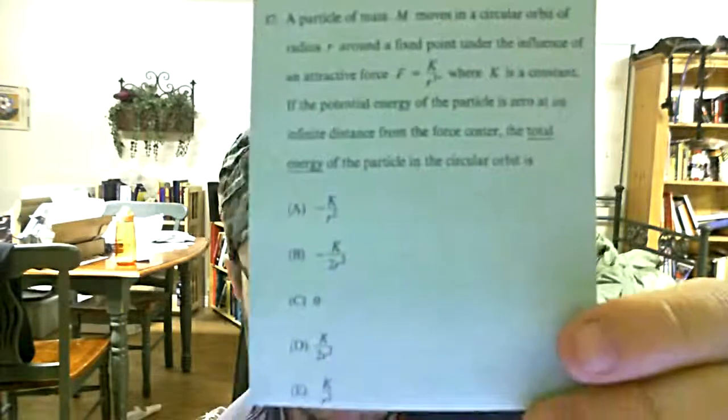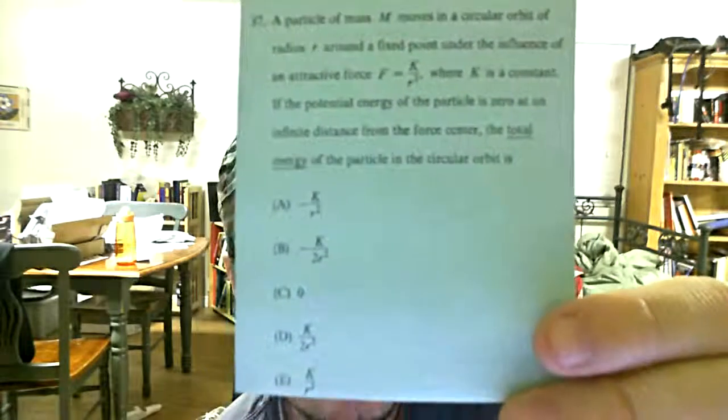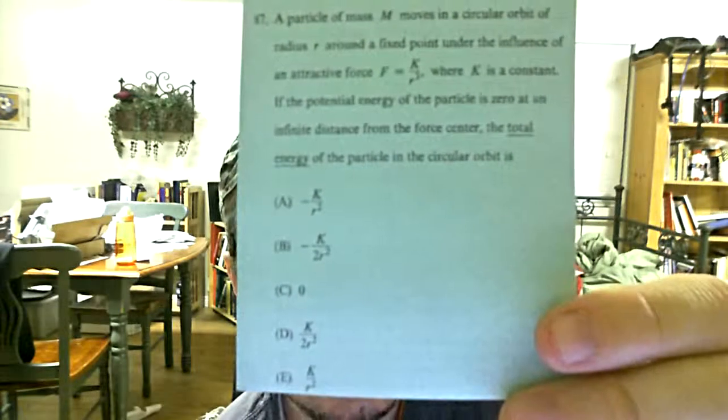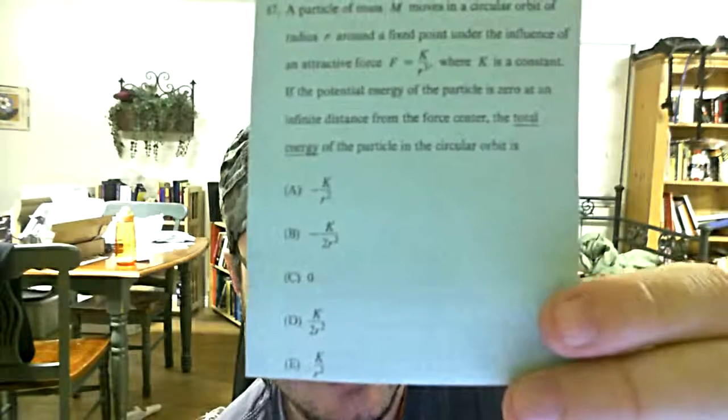And then glance at those answers. The only one that jumps out as being different is the zero. And then we have just factors of a negative and one half over the other answers. And when you see something like that, when you see answers that are very similar like that, tread very carefully.